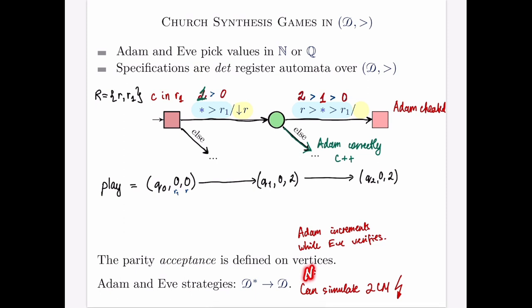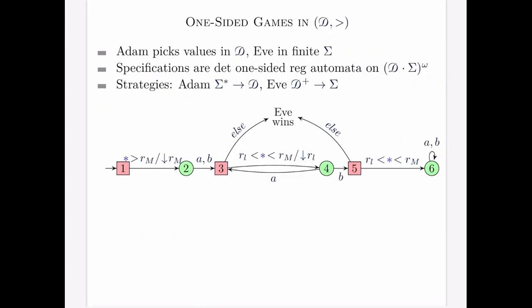We now know it's undecidable to solve Church Synthesis games with the domain of natural numbers, so we focus on one-sided Church games. In one-sided Church games, Eve picks values from a finite alphabet while Adam still picks values from the data domain. The specifications are deterministic one-sided register automata, which work on sequences of data and a finite alphabet. Eve's strategies output a letter from the finite alphabet, and therefore Adam reads letters from the finite alphabet.